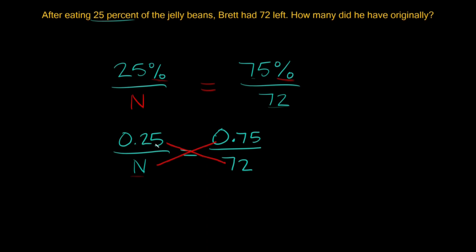So first of all here we have 0.25 times 72. 0.25 times 72 and then we're gonna set that equal to our other cross right here 0.75 times n, 0.75 times n.